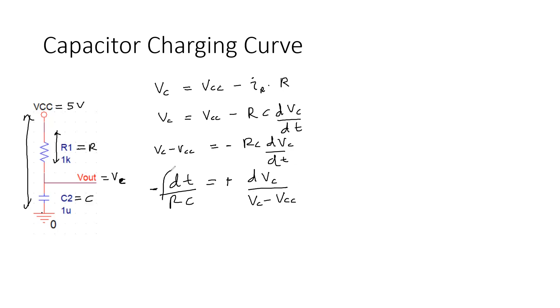I'm going to integrate both sides, so T goes from 0 to T. Initially we assume this capacitor is totally discharged so there's no voltage, so voltage VC goes from 0 to VC.